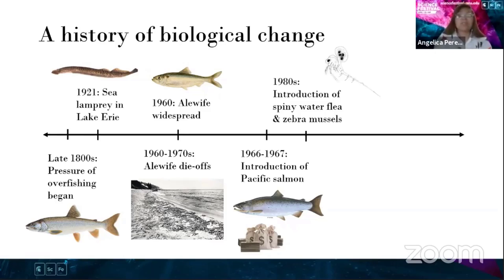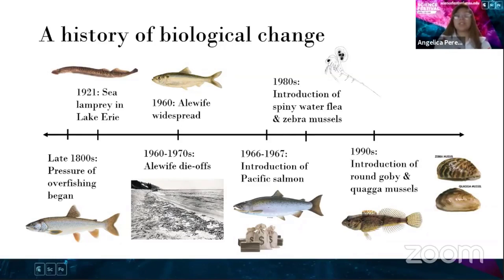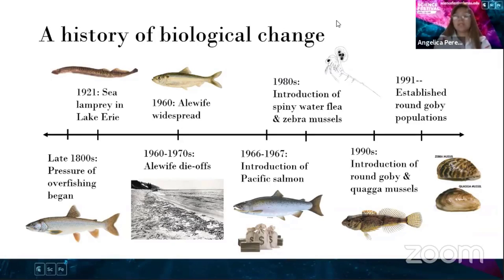Management thought that introducing Pacific salmon would be a great solution because Pacific salmon consume a lot of alewife — that is a big proportion of their diet — along with the fact that introducing salmon would create a multi-billion dollar industry in our lakes. In the 1800s, we begin to see a rise in invasive species from the Ponto-Caspian region — the Black Sea or the Caspian Sea — introduced through ballast water, including spiny water flea, zebra mussels, round goby, and quagga mussels. By 1991, the round goby population had become established inside our lakes.